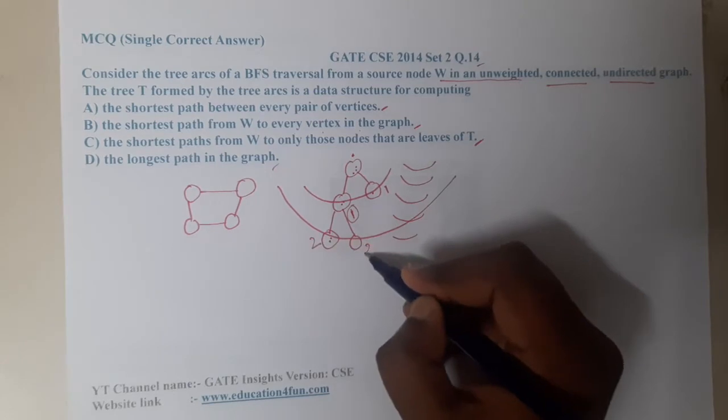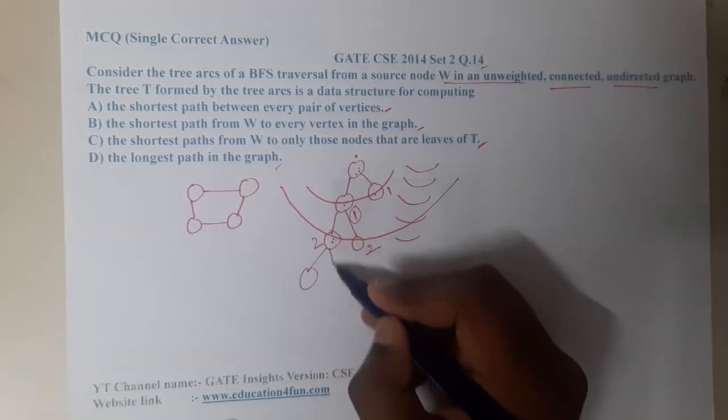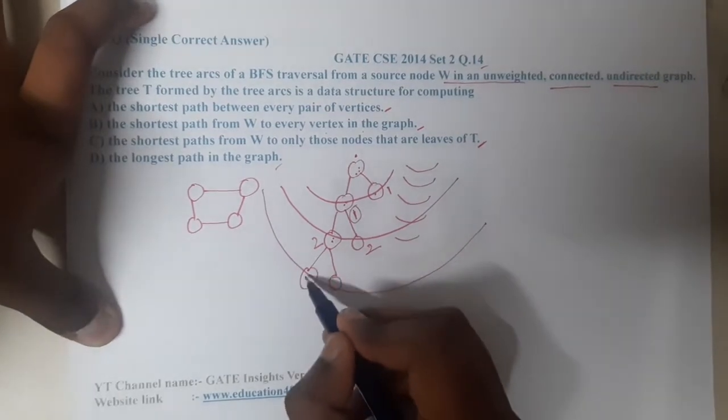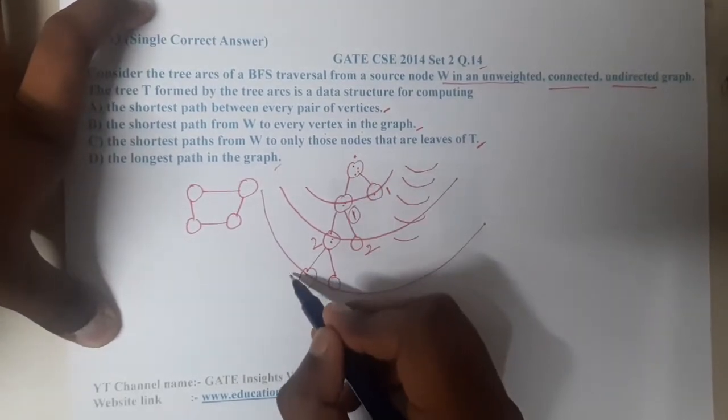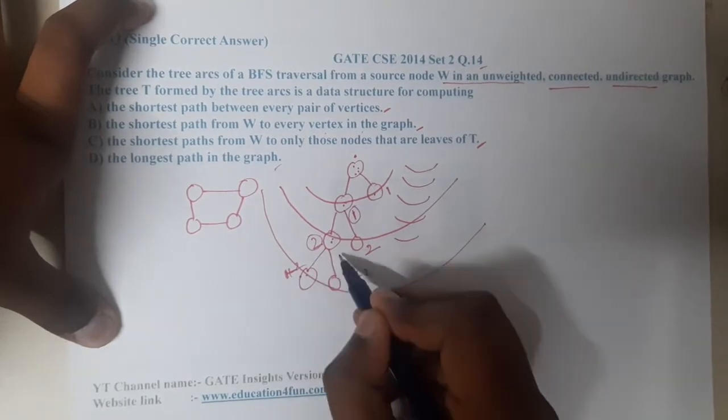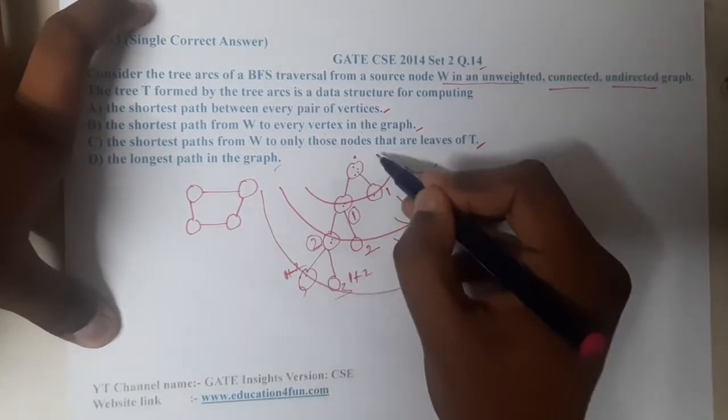If you go for one more layer, arc three, at this time the distance between this to this will be this distance, which is one plus the previous distance two. Similarly, one plus the previous distance two. In this way you can calculate the distances from root node for each and every node.